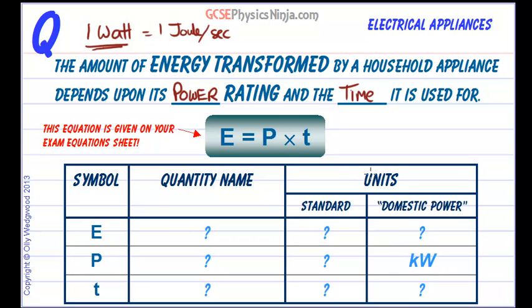Let's go through and look at two types of units for energy, power and time: standard SI units (system international units) and domestic power units, which are a bit different. They are a bigger unit which is more convenient for us to measure power and energy.